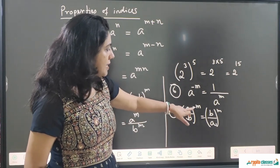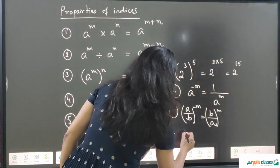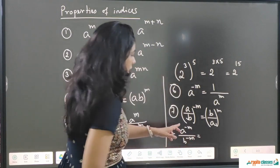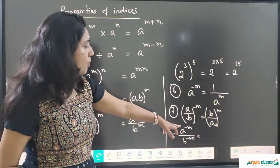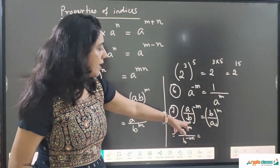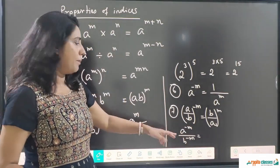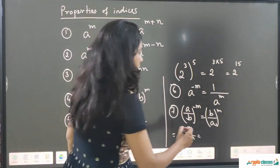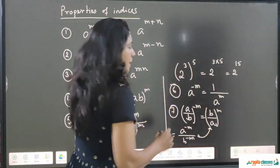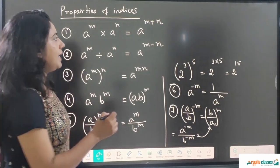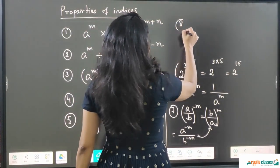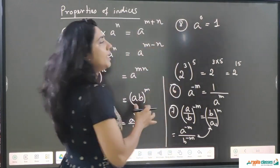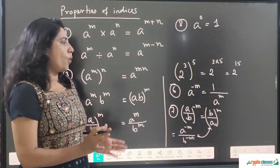We can see (b/a) to the power minus m: if I elaborate it, it is a to the power minus m and b to the power minus m. When a to the power minus m is in the numerator with a negative power, taking it down makes the power positive; and if the denominator has a negative power, taking it up makes it positive. The last property is: a to the power 0 equals 1 — anything to the power 0 is always 1.